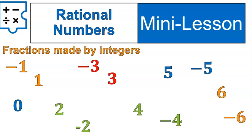any combination of these integers that we have on the board made into fractions are rational numbers. So they include positive fractions, negative fractions, and zero. Let's look at some examples of rational numbers.